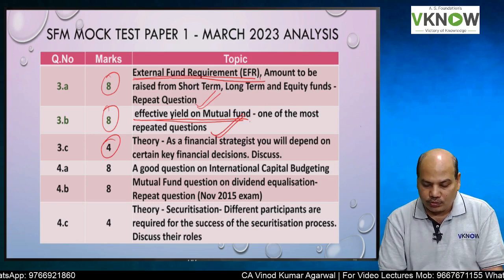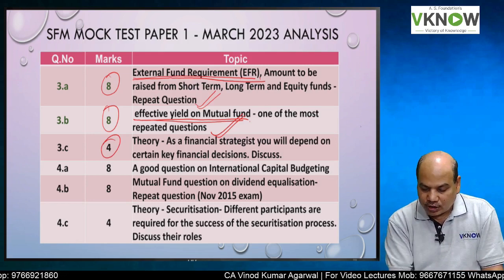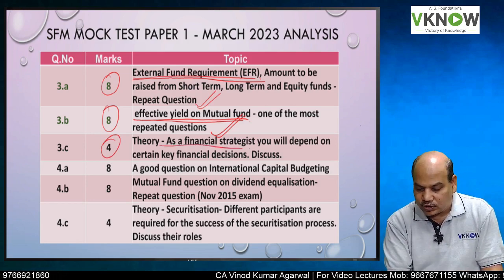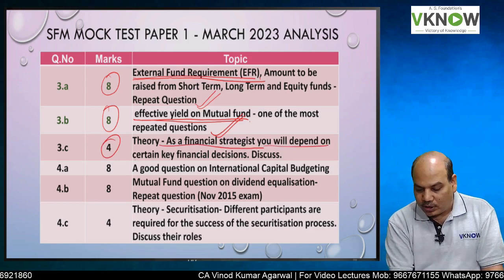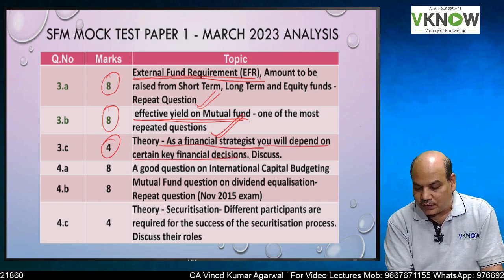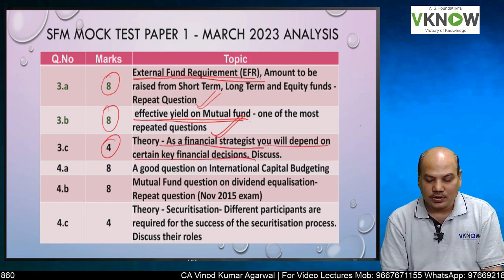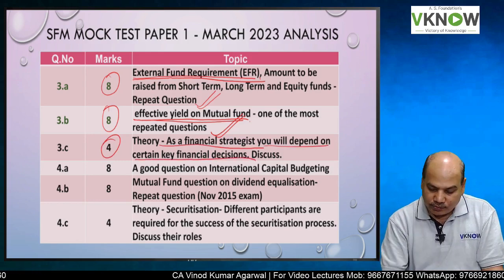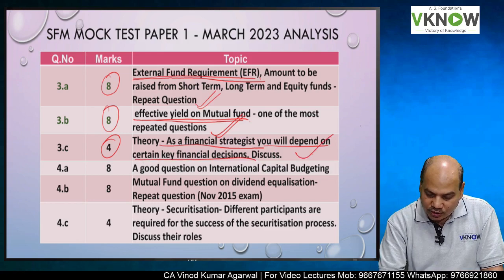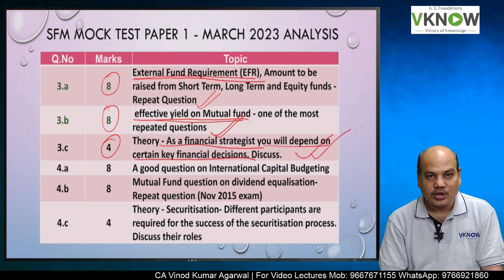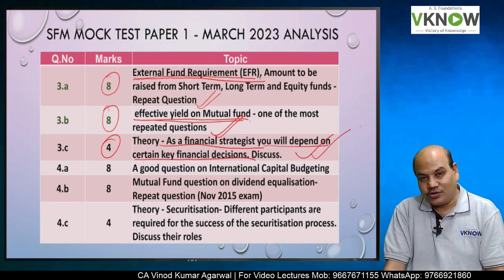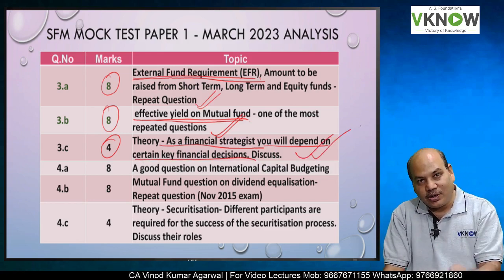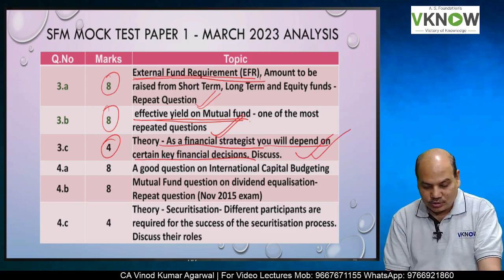Question 3C is a 4-mark theory question: as a financial strategist, you depend on certain key financial decisions — discuss. Write down as much as you can; imagination is the limit for such questions.